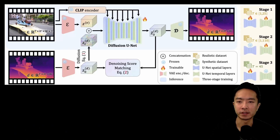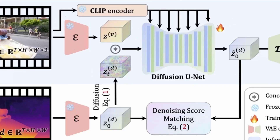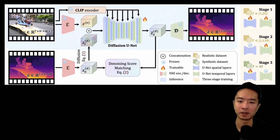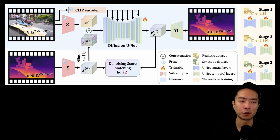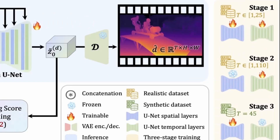Here you can see the structure of the DepthCrafter model. You can see up on top there's a CLIP encoder that passes into the Diffusion unit. And then at the bottom there's a denoising score matching going on. And at the far right, you can see that they broke up the training into three stages where they combine a synthetic dataset as well as a realistic dataset.